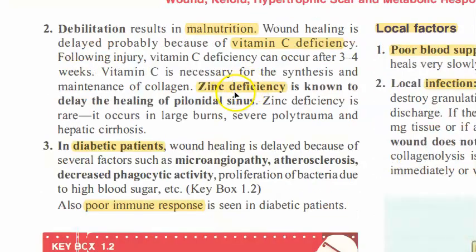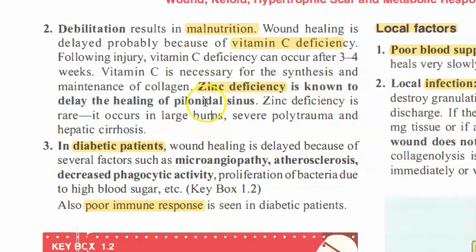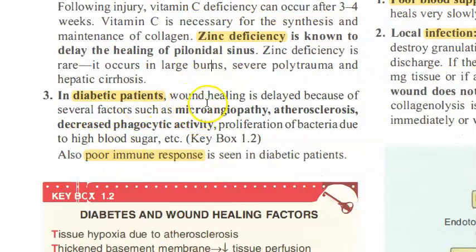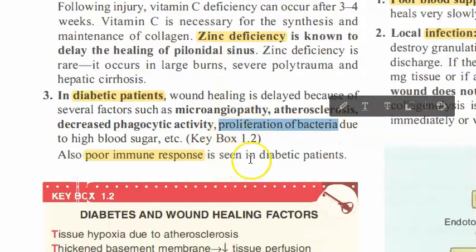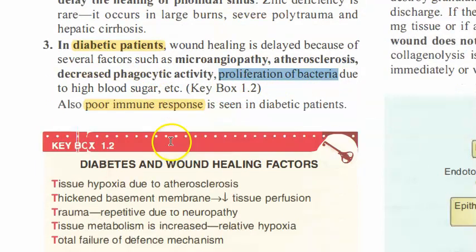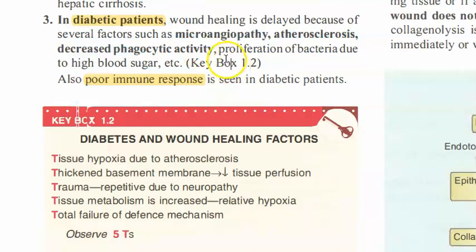Zinc deficiency will also delay healing. In diabetic patients, wound healing is delayed because they have microangiopathy, atherosclerosis, and decreased phagocytic activity — they are immunosuppressed. High blood sugar also allows bacterial proliferation, which is why diabetic patients end up with non-healing ulcers.